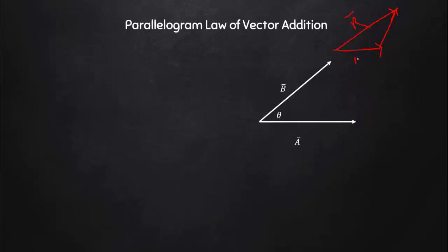In the parallelogram law, instead of placing the tail of the second vector at the head of the first, we add the tails of both vectors at the same point. So both vectors have their tails at a common point, which directly gives us the angle between them. Now I replicate that structure and create another structure — the vector a-bar on one side, b-bar on another side. These two pairs are equivalent and parallel, which means a parallelogram is formed. The parallelogram law of vector addition states that the diagonal of this parallelogram gives you the resultant.